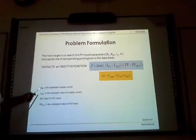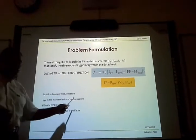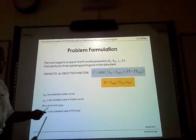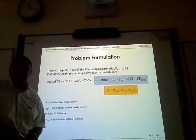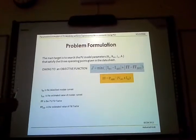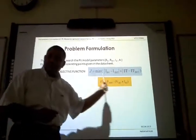So, I_pv is the data sheet module current, I_estimated is the estimated value of module current, FF is the PV fill factor, and FF_est is the estimated value of fill factor. So the main objective is to estimate these values which can minimize this objective function.